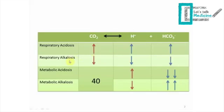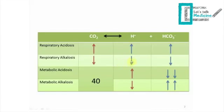In respiratory alkalosis, we're going to have a decrease in CO2 — that's the cause — which will drive the whole equation to the left, decreasing hydrogen ions and decreasing bicarbonate, though again not significantly. A very important example is hyperventilation: when you hyperventilate, you flush out all of your CO2, causing the equation to go left and giving you respiratory alkalosis. This is a common exam question.